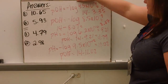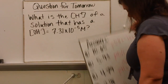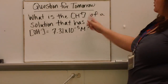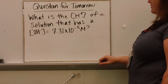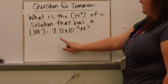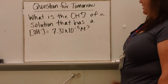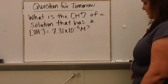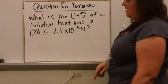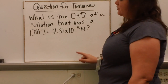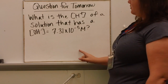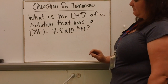The question for tomorrow: what is the hydrogen concentration of a solution that has a hydroxide concentration of 7.31×10⁻⁵ M? Use all the concepts we talked about today and your reference packet, and come tomorrow with a way to solve this problem.